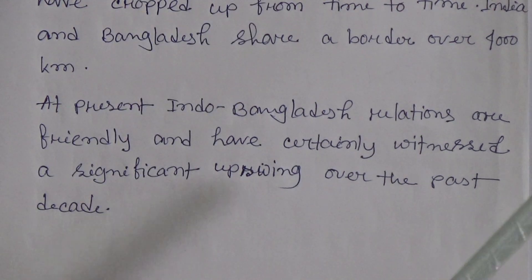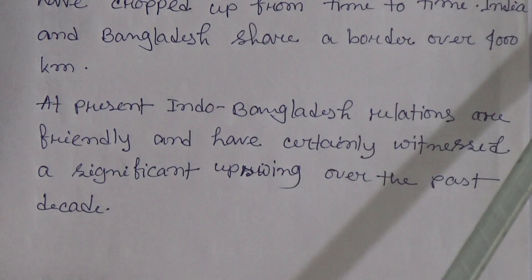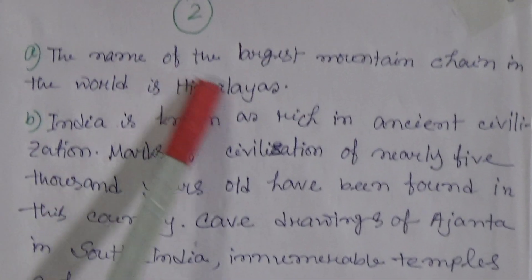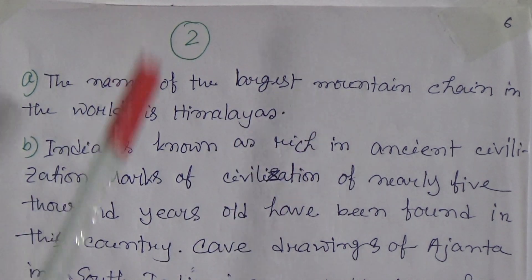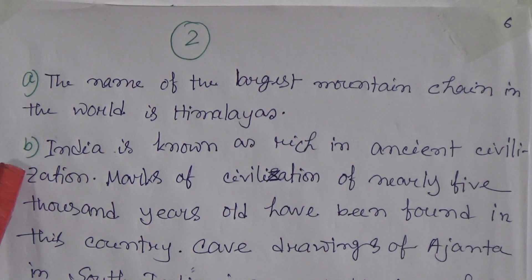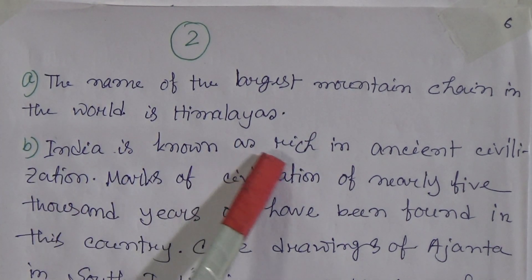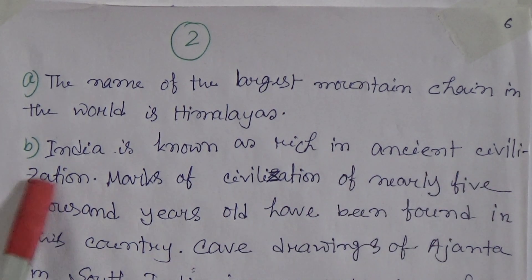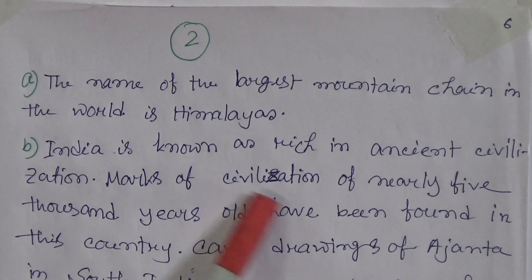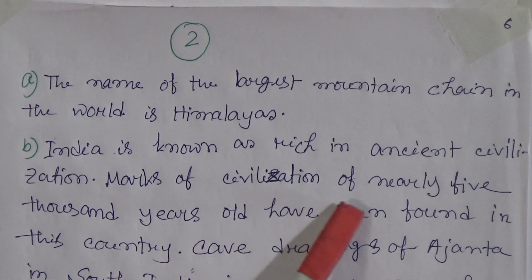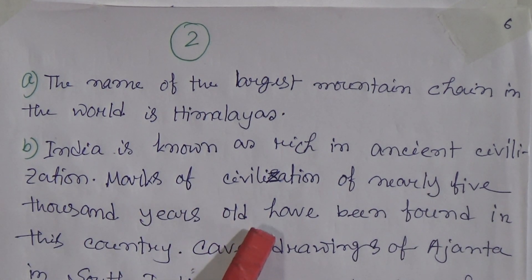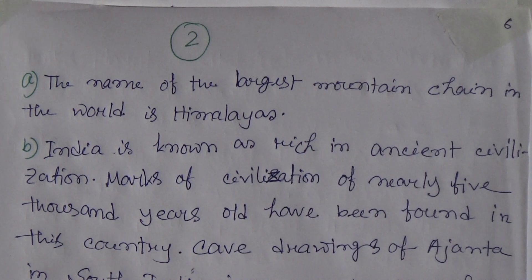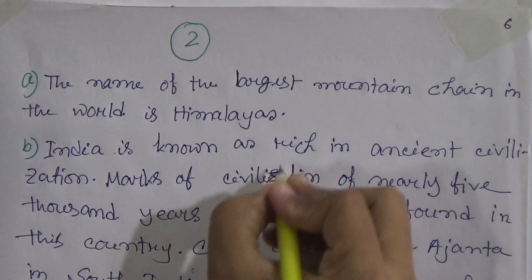Now the answers for question two. Question two-a: The name of the largest mountain chain in the world is the Himalayas. Question two-b: India is known as rich in ancient civilization. Marks of civilization of nearly 5,000 years old have been found in this country.